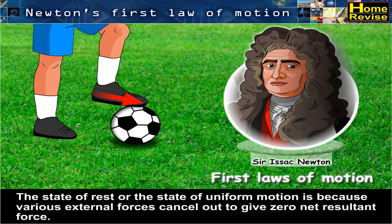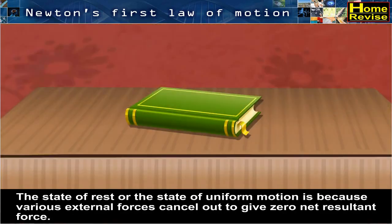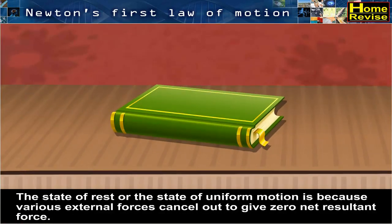The state of rest or the state of uniform motion is because various external forces cancel out to give zero net resultant force.